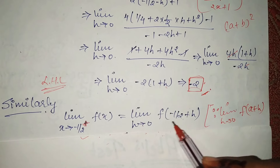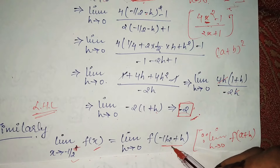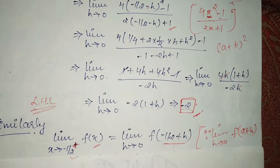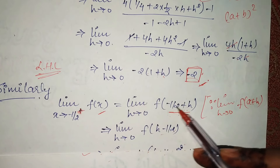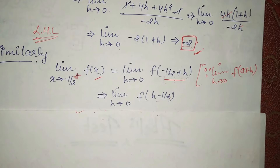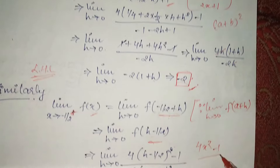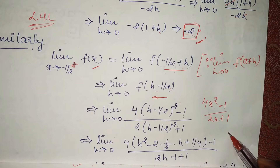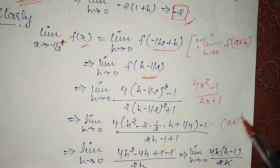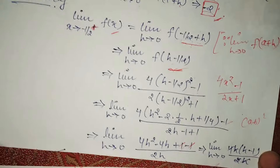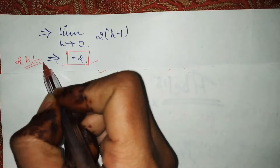Now, for the right hand limit, put x = (minus 1 by 2 plus h) into the function (4x² − 1) / (2x + 1). Arrange the terms: plus terms first, minus terms last. Apply the formula (a minus b)² here, and cancel out the values that cancel. After solving all the values and putting h = 0, you get minus 2. So the right hand limit value is also minus 2.